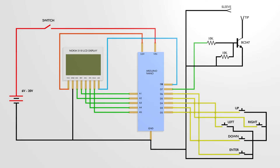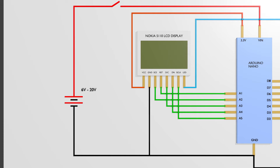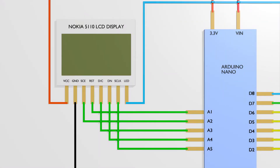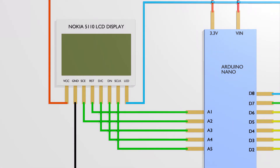Starting from left to right, the battery is connected onto the Arduino — the positive going onto the VIN and the negative going to ground. The LCD is connected on pins A1 through to A5. This is not a conventional pin arrangement for LCD screens, so just be careful how you wire it up.